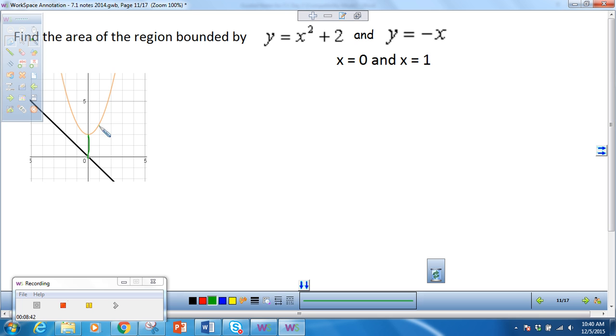And so we can see this is the area that we're integrating, that we're trying to find. We're trying to find this area. So since they gave us our limits, we don't need to set them equal to each other because we see that they're never equal. So I can integrate from 0 to 1. Now which one's on top? The quadratic's on top and negative X is on the bottom.